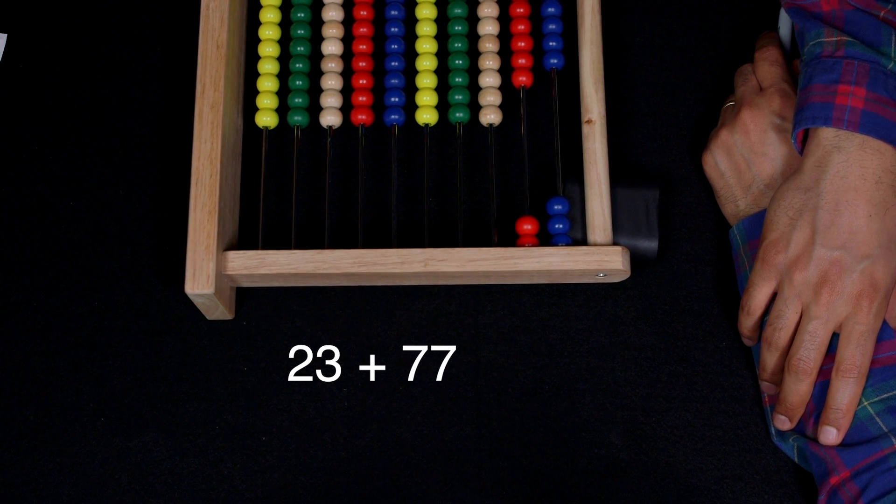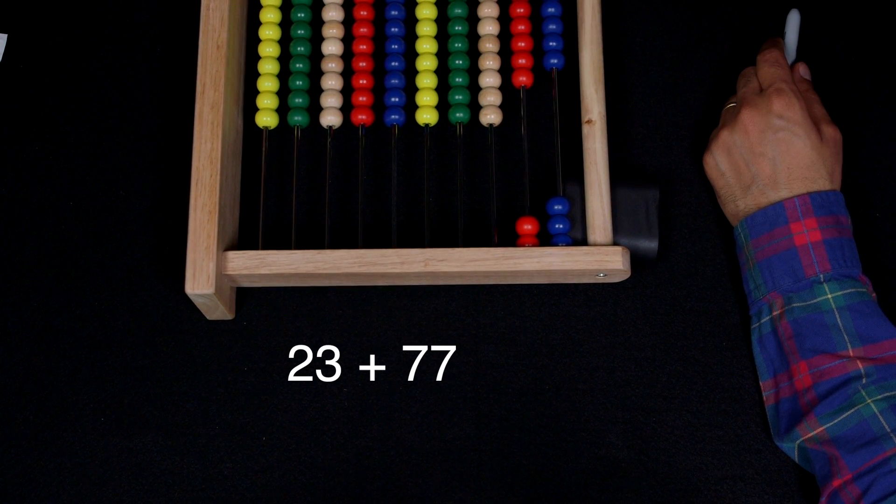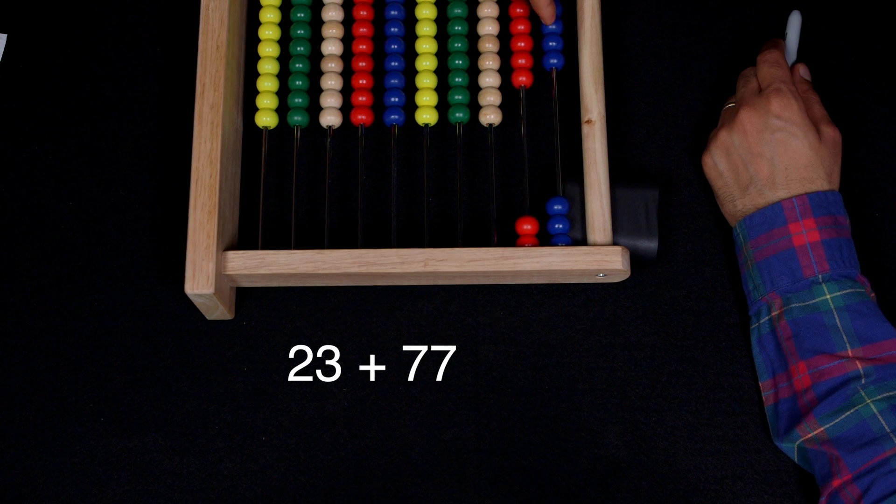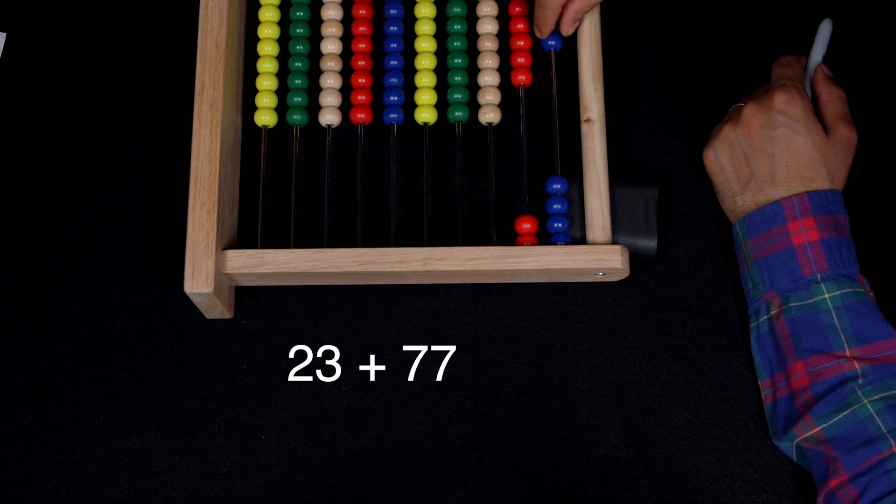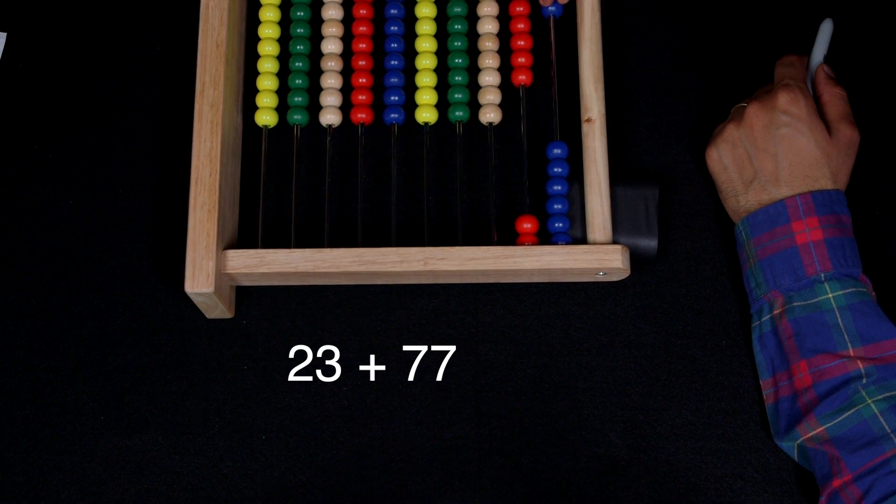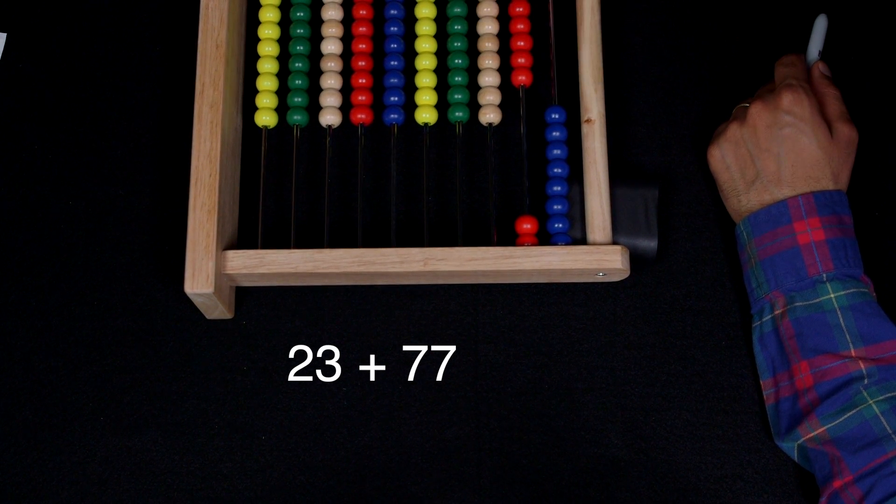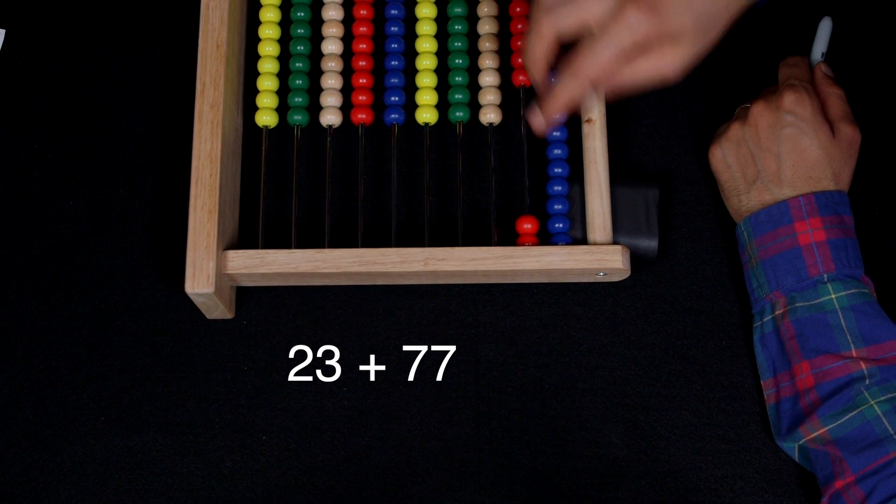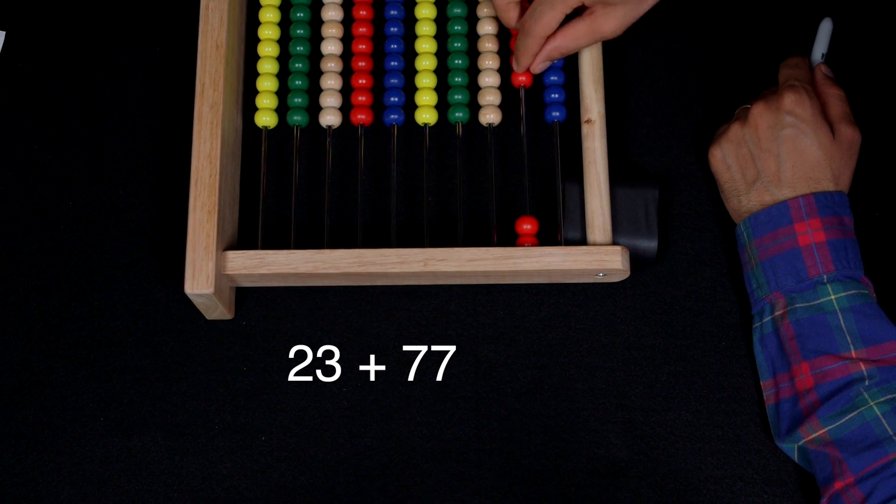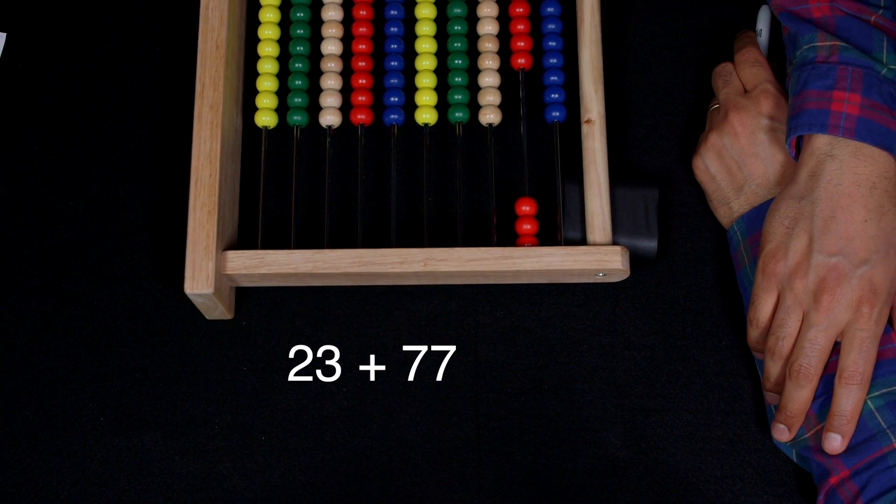So, let's think about this a little bit. 23 and then 77. So, let's add the seven first. So, we're going to add one, two, three, four, five, six, seven. But we can swap all of these in for one more of those. So, so far I've just added seven.